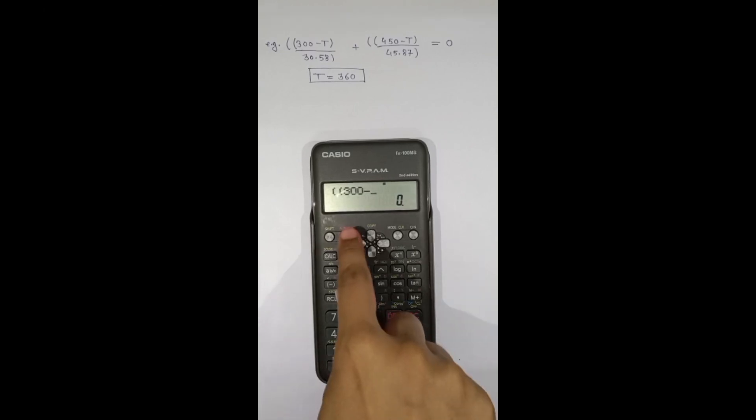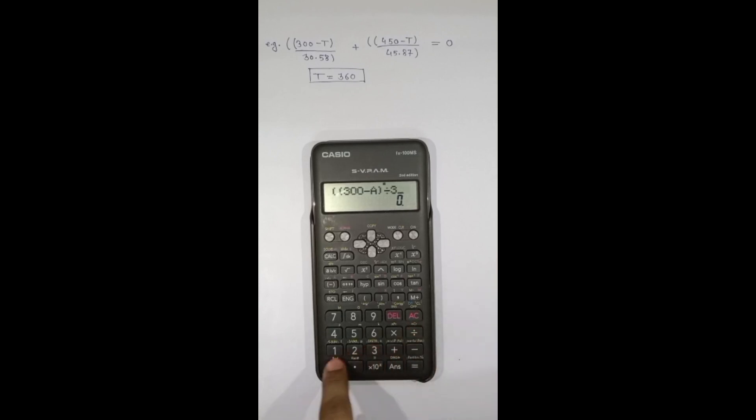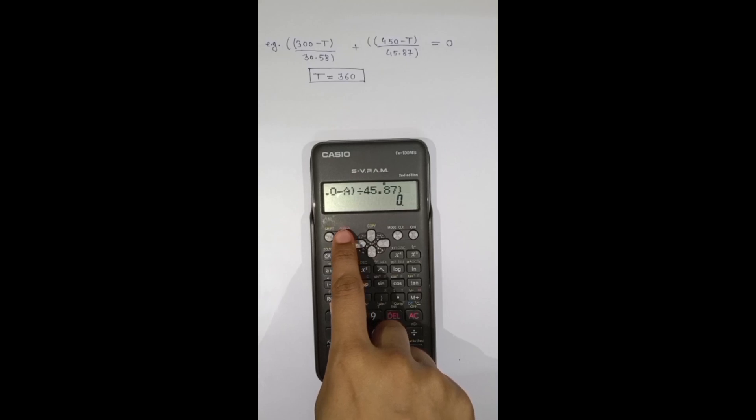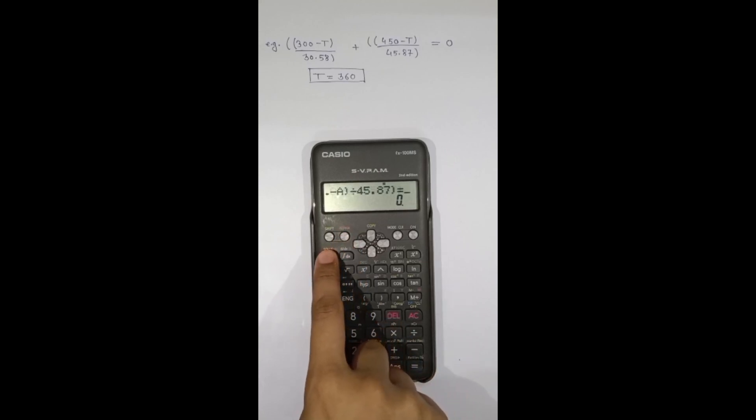Double bracket 300 minus alpha a bracket upon 30.58 bracket close plus double bracket 450 minus alpha a upon 45.87 bracket close alpha equals to 0, shift solve, shift solve.